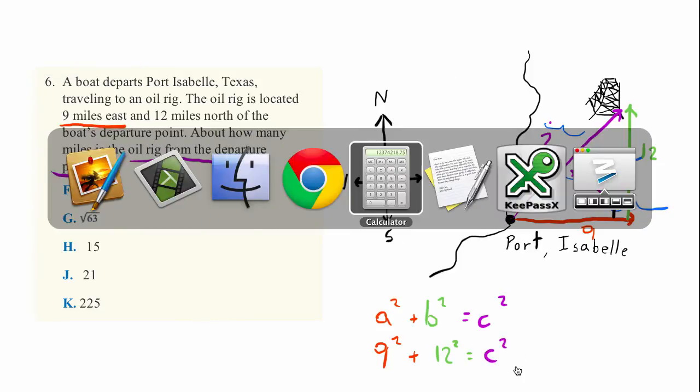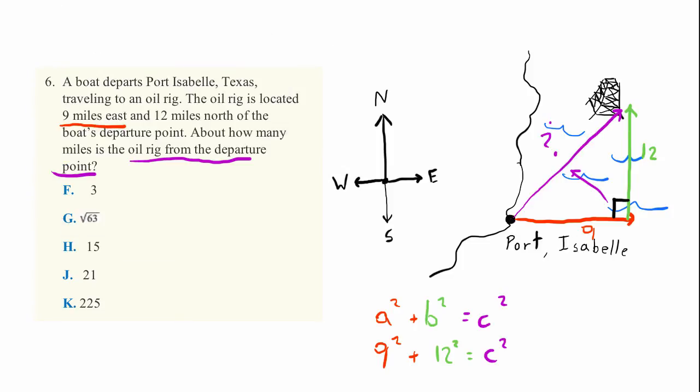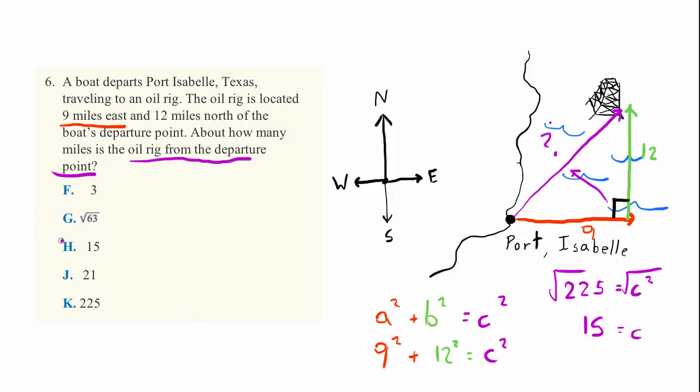We can do 9 squared plus 12 squared is equal to 225. So 225 is equal to c squared. If we take the square root of each side of this equation, we get c, which is of course the square root of c squared, is equal to 225 square root is 15. And that's the correct answer, H.